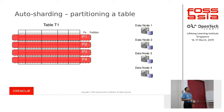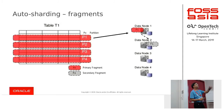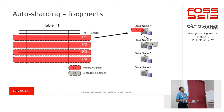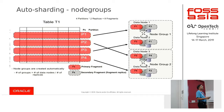Partition P1 stores its data in data node 1 as the primary fragment (F1), while the same data is replicated in data node 2 as the secondary fragment. This way, if data node 1 goes down, data node 2 still has both F1 and F3 contents — that is why we say there is no single point of failure. Node groups are created based on the number of data nodes and the replica count. We currently support 2 replicas but you can create up to 4.